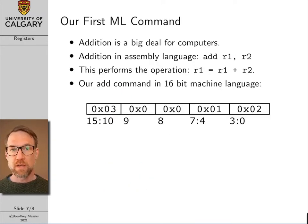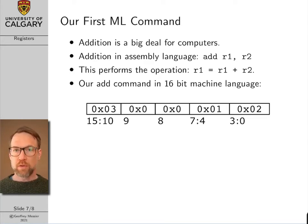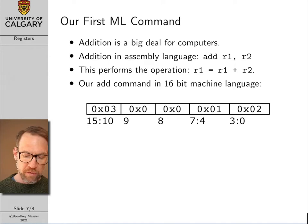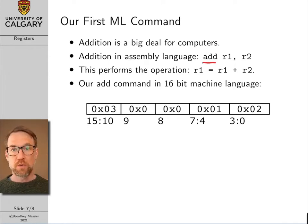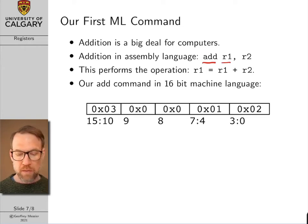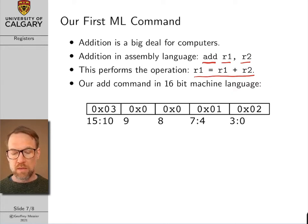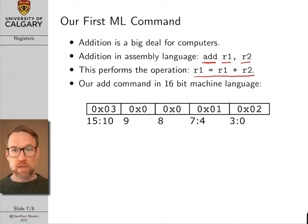Now we're ready to look at our first machine language instruction. As we continue to develop our microarchitecture, we'll start looking at 16-bit machine language instructions and designing digital logic to read and execute them. The first instruction is ADD. In assembly language you type the word ADD followed by two registers — for example, ADD R1, R2 performs R1 = R1 + R2. The ADD operation only works with registers.